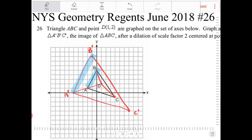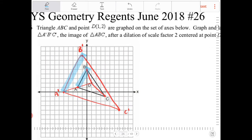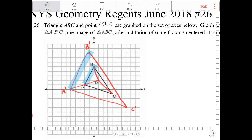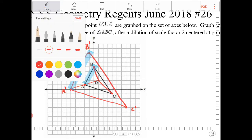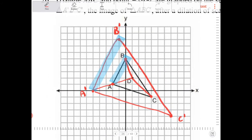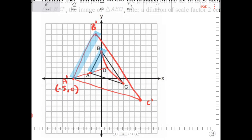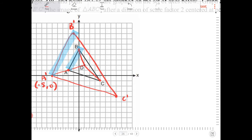And let me see here. Graph and label A'B'C' the image after a dilation, a scale factor of 2. So one thing I forgot to do is I forgot to indicate the coordinates of A'B' and C'. So this is going to be 2, 4, negative 5, comma, 0. C' here is, let me see here, 2, 4, 6, 7. So 7, negative 4.